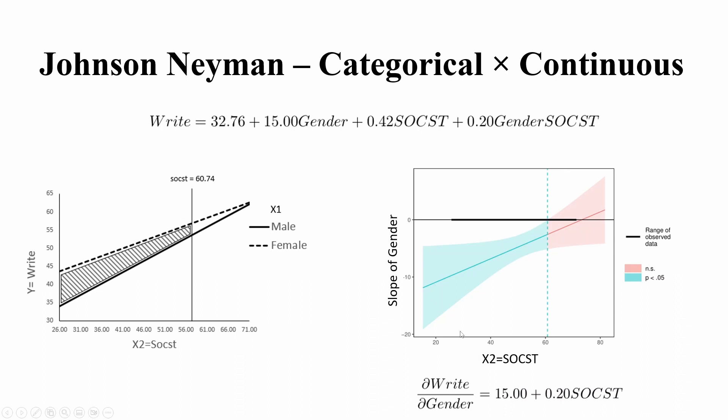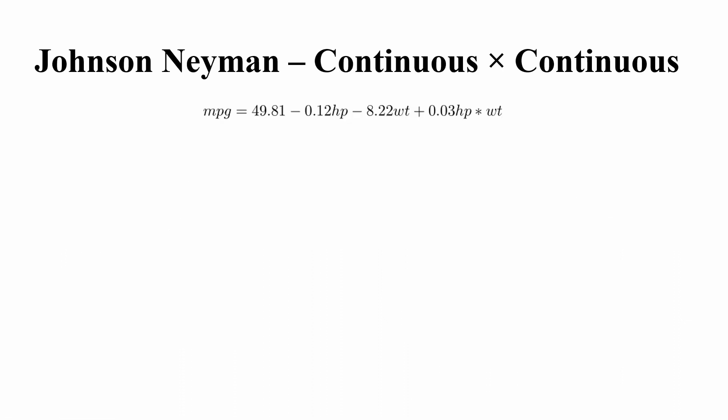So now you can see that for the situation of categorical times continuous, you have two ways to plot the Johnson-Neyman. One is the y is the original y, but another one is that the y is the slope of the categorical variable. The question becomes how you can plot the continuous times continuous situation.